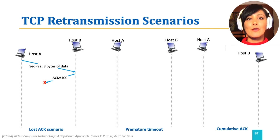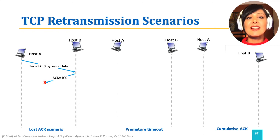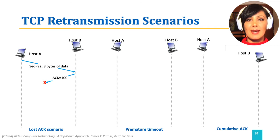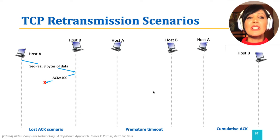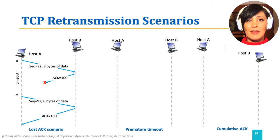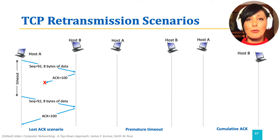The ACK for that segment from host B to A should contain the ACK for byte 100, indicating the next expected byte sequence number. If that ACK does not reach host A and is lost, host A will retransmit the segment on the event of timeout. The segment will have the same sequence number 92, and this time hopefully the sender will receive the ACK.